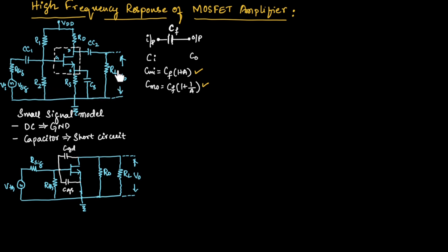To understand the high frequency response of MOSFET amplifier, let us consider the voltage divider bias circuit as shown in this figure. Here RD is the drain resistor, RS is the source resistor, R1 and R2 are the voltage divider bias resistors, R signal is the input resistor, VDD is the DC source voltage, VI is the input voltage, CC1 and CC2 are coupling capacitors, CS is the capacitor across the source resistor, and RL is the load resistor where we measure the output voltage.